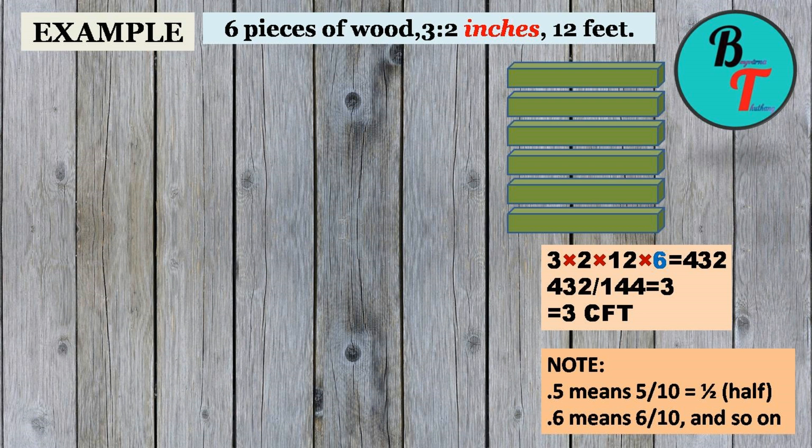If you have 6 pieces of wood of length 12 feet each and breadth and height as 3 is to 2, we have discussed the two ways to calculate. By our first process we need to multiply all the values and then divide by 144. Let us check this in our calculator.